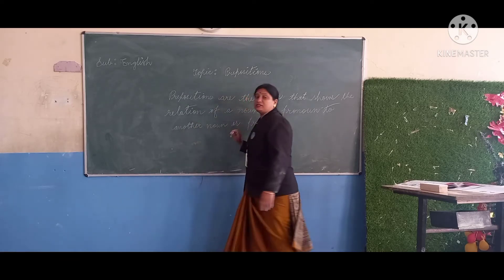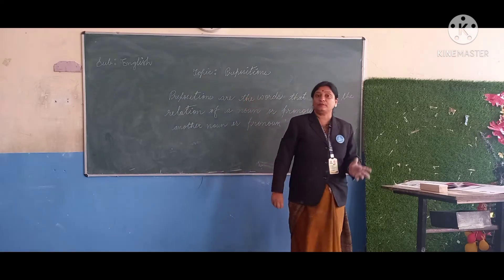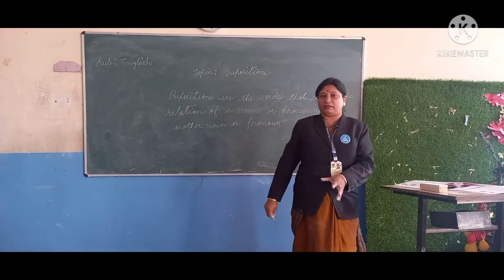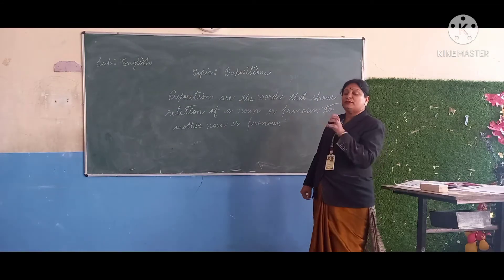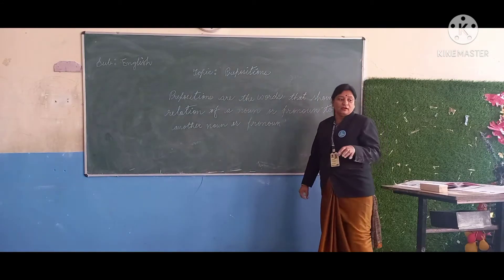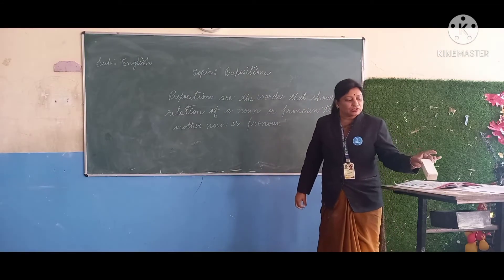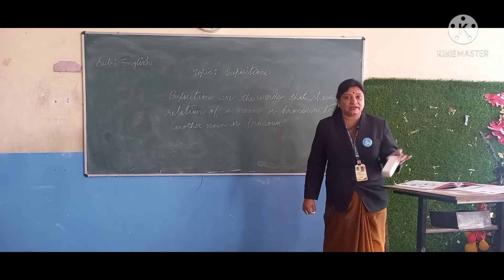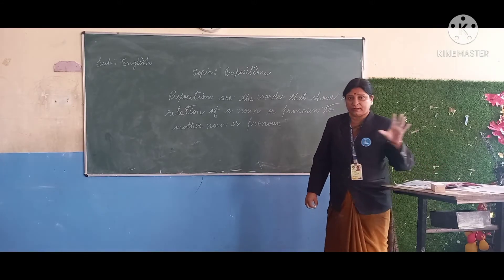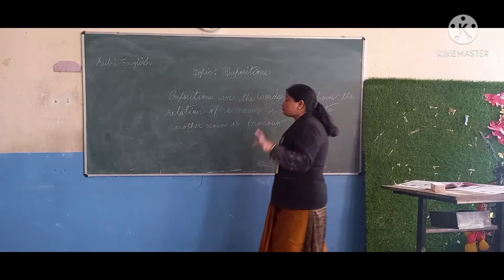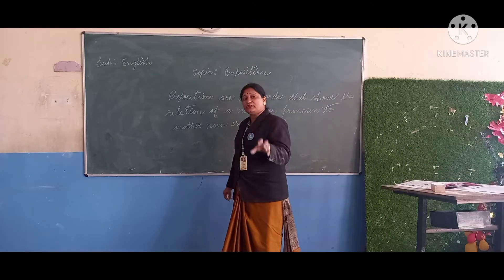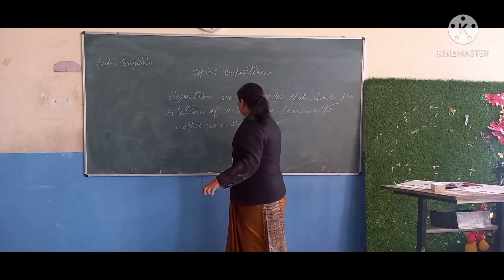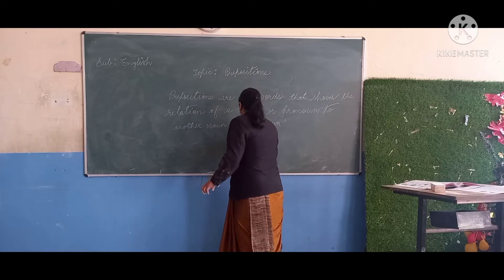We use prepositions to show the position of something. For example, the duster is on the table. So, which word is showing the position? That is 'on'.